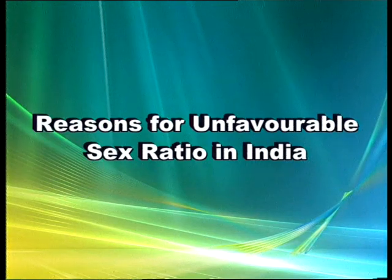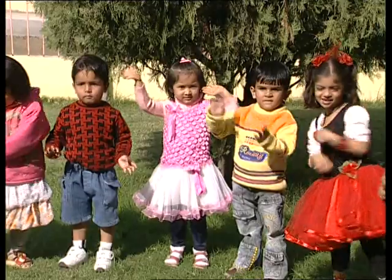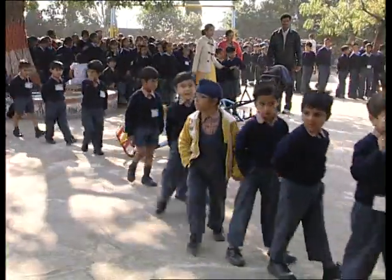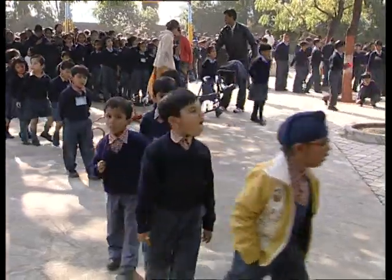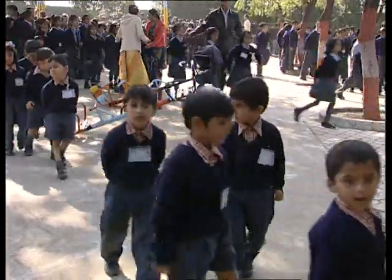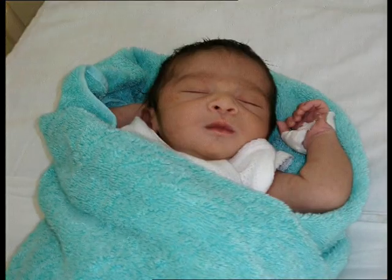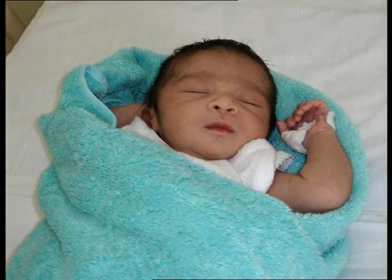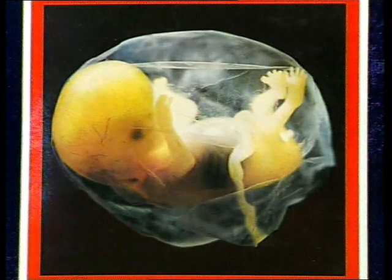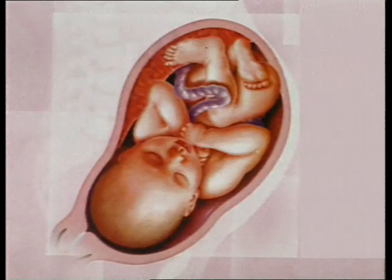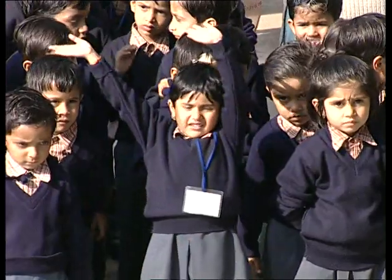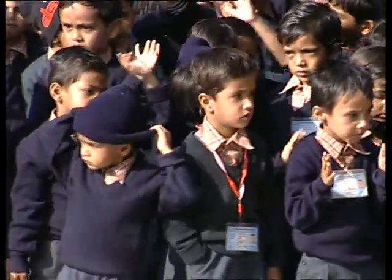There are several reasons for the unfavourable sex ratio in India. First, biologically, more males are born than females. Second, males get preferential treatment in comparison to females. Third, female infanticide, which means girl children are killed just after birth. Fourth, female feticide, which means girl children are killed even before birth. Evidence shows that sex-selective abortions have increased dramatically in India.